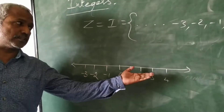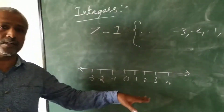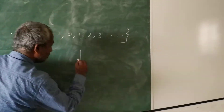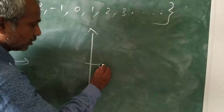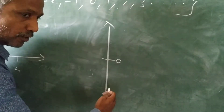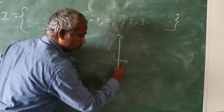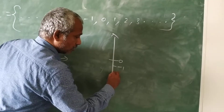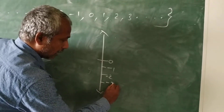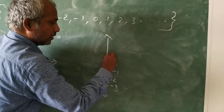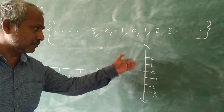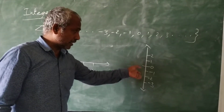This number line will be horizontal. Suppose we are taking a vertical number line — here also you have to fix 0 first. Then, at the bottom of the 0, we have to take the negative values. At the top of the 0, we have to take the positive values. This is the vertical number line.